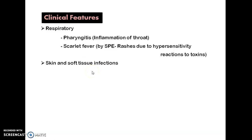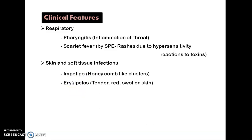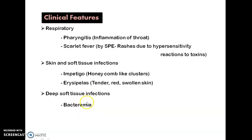Skin and soft tissue infections caused by Streptococcus include impetigo and erysipelas. Impetigo presents with honeycomb-like clusters of blisters, and in erysipelas the skin will be tender, red, edematous, and swollen. Deep soft tissue infections include bacteremia — invasion of blood by bacteria — toxic shock syndrome (TSS), and necrotizing fasciitis.